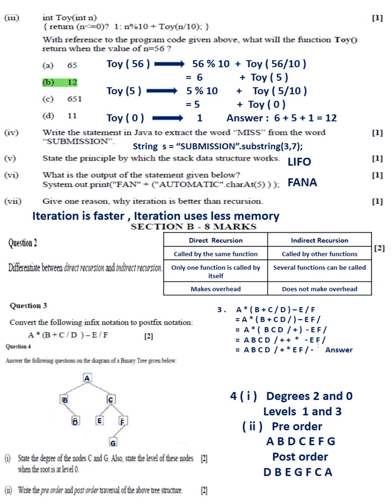Question 3 answer: A - division operator, B - plus operator, C - multiplication operator, D - division operator, E - minus operator, F - division operator. Question 4 Part 1: degrees 2 and 0, levels 1 and 3.